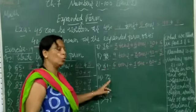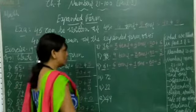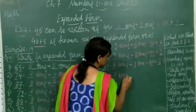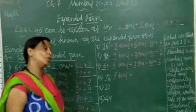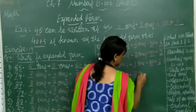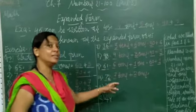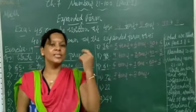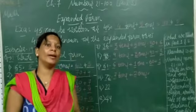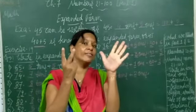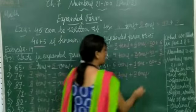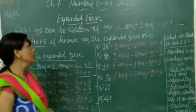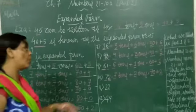Now next: 72. In 72, how many 10s? 7 10s. Plus how many 1s? 2 1s. So 7 10s — 1 10 equals 10, 2 10s equals 20, 3 10s equals 30, 4 10s equals 40, 5 10s equals 50, 6 10s equals 60, now 7 10s equals 70. So write 70 plus 2 — 70 plus 2 is equal to 72. 70 plus 2 is the expanded form of 72.